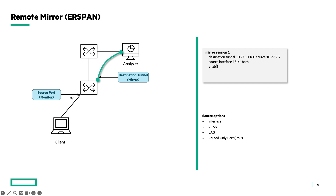The source is the traffic that you want to mirror, so source interface 1/1/1. I want to mirror all the received and transmitted packets, so I use the BOTH command. Also enable the mirror session. The source interface options are exactly the same as the local mirror.